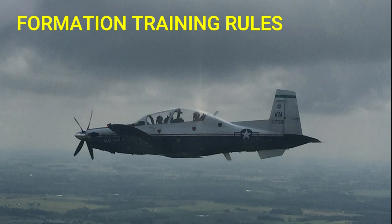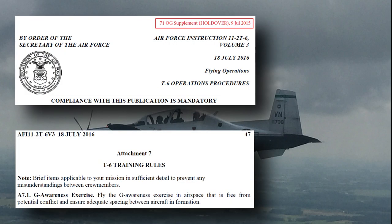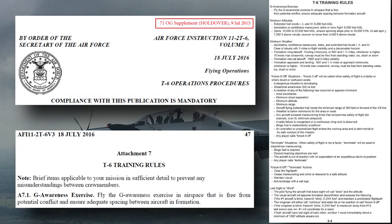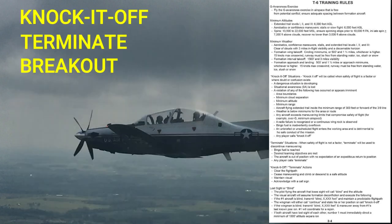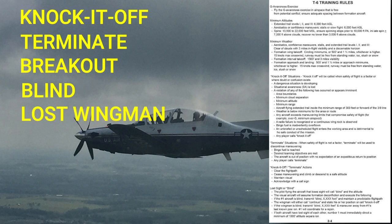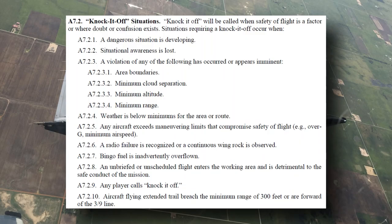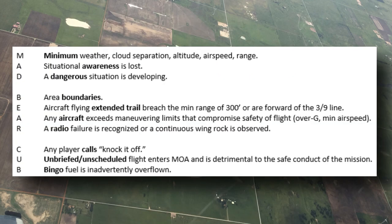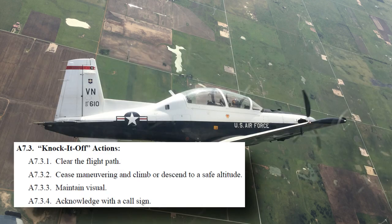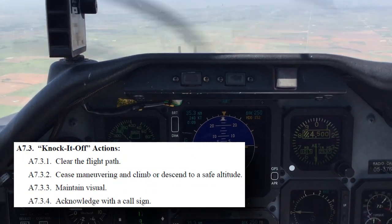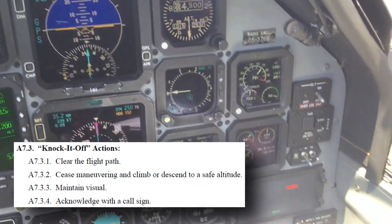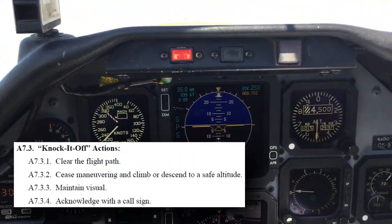Formation training rules are found in the 11-2-T-6 Vol-3 and in-flight guide. Some of the safety of flight rules unique to formation flight include knock it off, terminate, breakout, blind, and lost wingman procedures. Knock it off will be called when safety of flight is a factor or where doubt or confusion exists. Knock it off actions are CCMA: clear and avoid any hazards in your flight path, cease maneuvering, maintain visual of the other aircraft, and acknowledge the radio call.